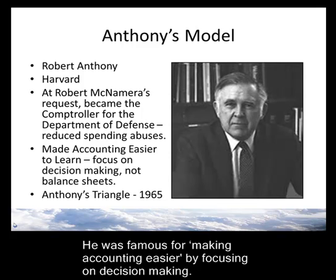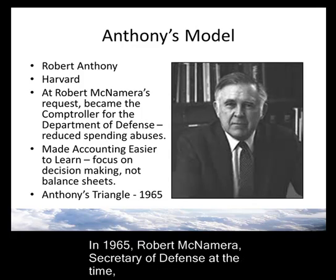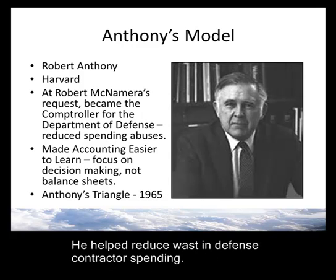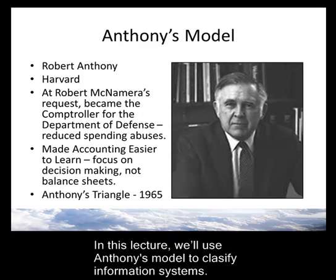In 1965, Robert McNamara, Secretary of Defense at the time, asked Anthony to become the comptroller for the Defense Department. This was a time when defense companies had projects and budgets that were out of control. Anthony's leadership and innovation helped with this problem and gave us a view of accounting that was more as a control system than simply balance sheets. In this lecture, we're going to use a simple organizational control model that he used to describe companies, and use it to define information systems and how they are classified at different organizational levels.